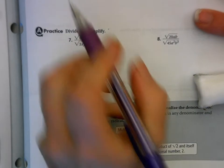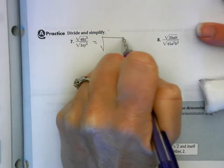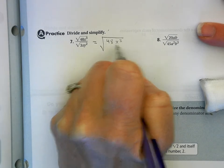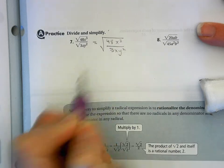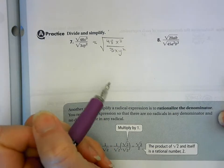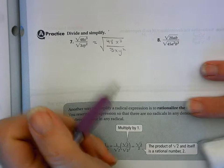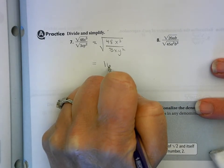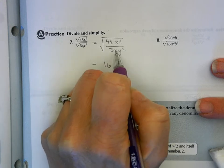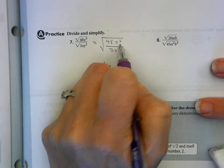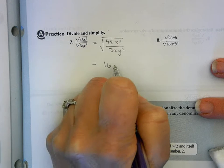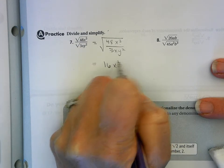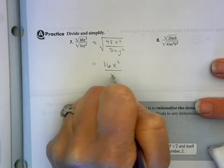I'm going to rewrite this as one radical. My fraction is 48x to the third, all over 3xy squared. I can combine it as a fraction under a single radical and then divide. So 48 divided by 3 is 16. I have 1x that will cancel one of the x's — I have 3 here, so one cancels, leaving x squared. There are no y's to reduce, so it's all over y squared.